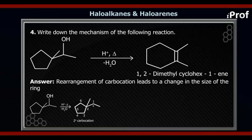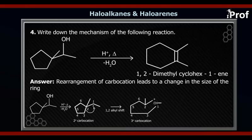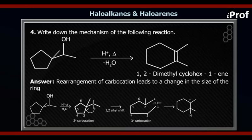If ring expansion takes place from the C2–C3 bond, then the bond between C2 and C3 will be broken, and C3 will make a bond with C1. The product formed will have a positive charge on C2, because the C2–C3 bond was broken and C3 re-bonded with C1 — therefore C2 is electron deficient. On this C2, we now have a carbocation which is tertiary, and it is highly stable for this particular structure.